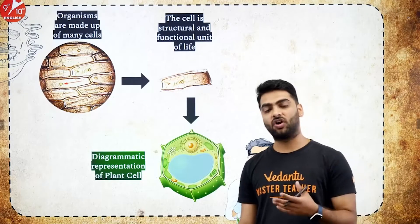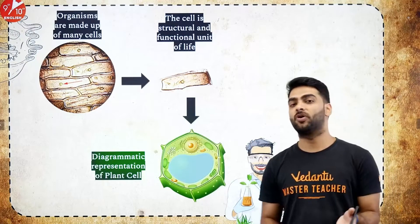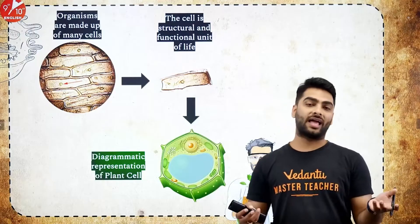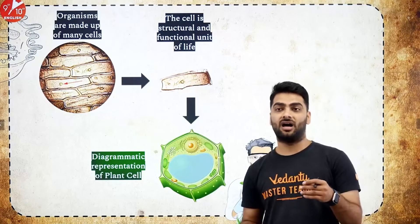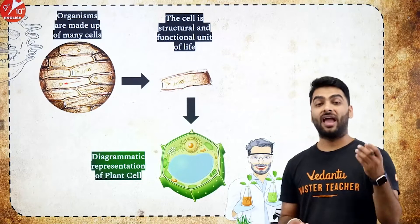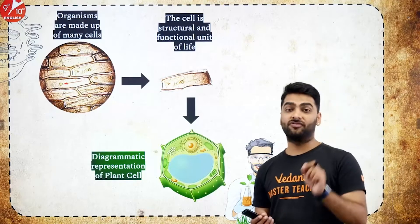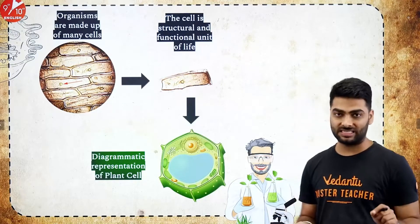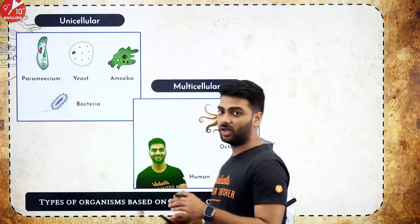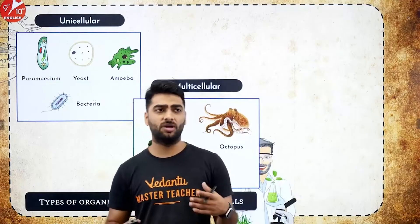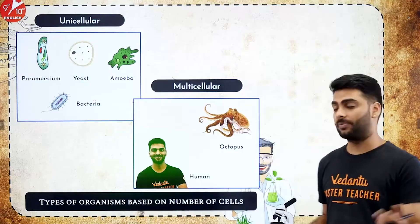It was then that we got the cell theory by Schleiden, Schwann, and eventually by Virchow, who gave us three postulates: all living organisms are made up of cells; cells are the fundamental unit of life; and cells are the structural and functional unit of life. Virchow also told us that cells arise from pre-existing cells. We know that organisms on this planet are either unicellular like bacteria, amoeba, paramecium, or multicellular like humans, birds, animals, fish, trees, and plants.